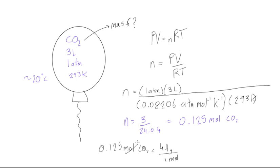Perfect. And so we can cancel out moles, moles, and we get, 0.125 times 44. Punch that in your calculator, and you get 5.5, and the units is grams of CO2.